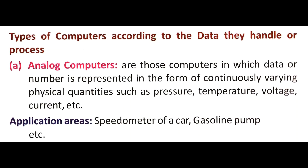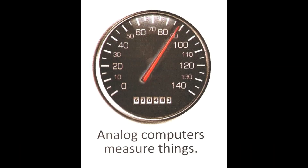Now we are going to discuss the different categories of computers. First: analog computers. Analog computers are those in which data or numbers are represented in the form of continuously varying physical quantities such as pressure, temperature, voltage, and current. In an analog computer, data continuously changes with respect to time. For example, temperature in the morning hours is different from temperature at noon and in the evening, meaning temperature always changes over the total time period. Analog computers are used in the speedometer of a car or a gasoline pump.